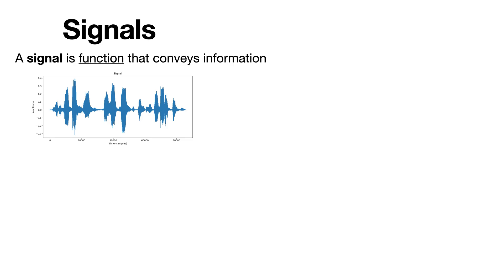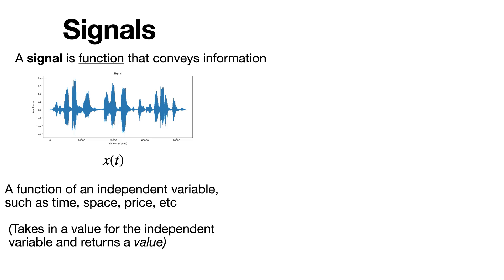Because a signal is a function, it depends on an independent variable. The signal basically tells us how some value responds as the variable in question changes. This variable can represent time, space, the price of something, and a lot more. So signals take in a value for their independent variable and return a value. In the example above, suppose you put in 7,000 for the time variable. Putting that into x will basically give you its amplitude at that particular time value.